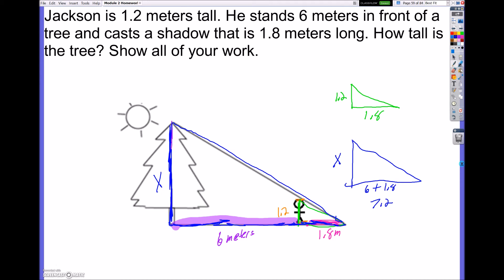So now when I look at this, I'm going to compare black color with black color on the triangle, as well as pink with pink. So when I set these up now, there's a few ways we can set it up. I'm going to have 1.2 over X. I'm comparing black with black with the corresponding sides. And 1.8 over 7.2. So now I'm going to cross multiply and divide.